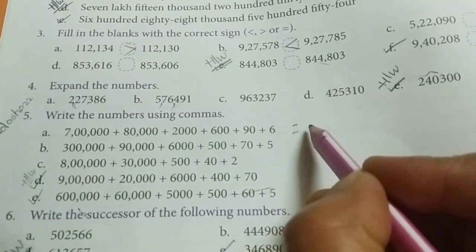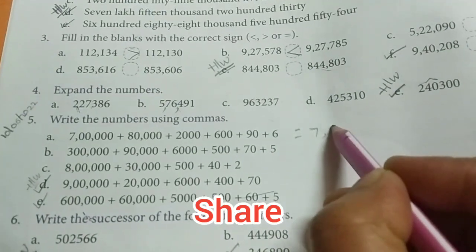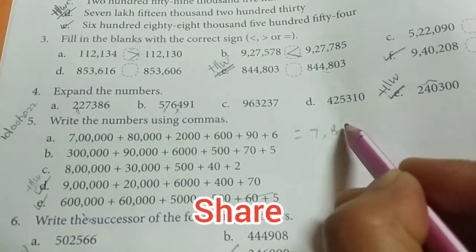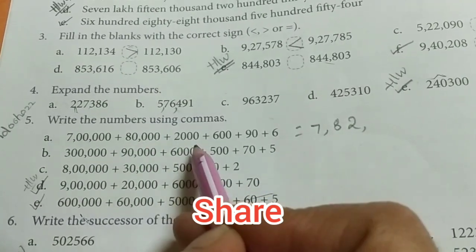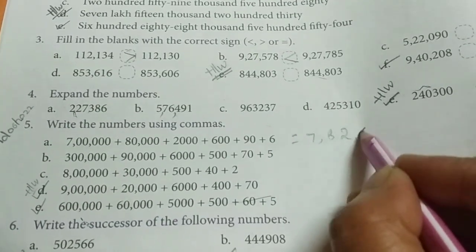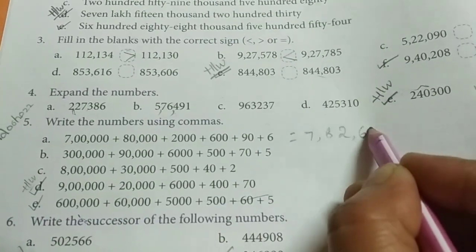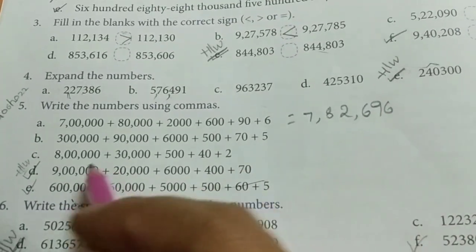So, 7 lakhs 82,000 plus 2,000. 82,696 is our number. Next,